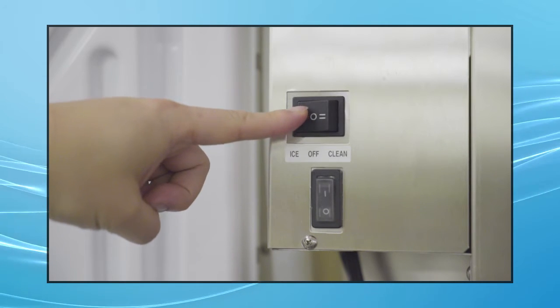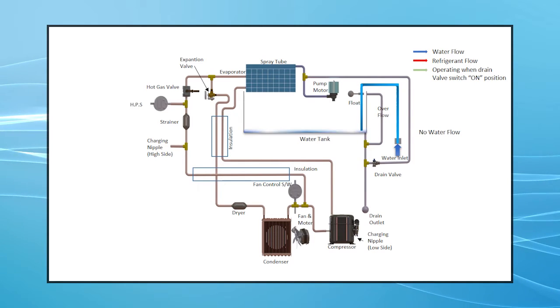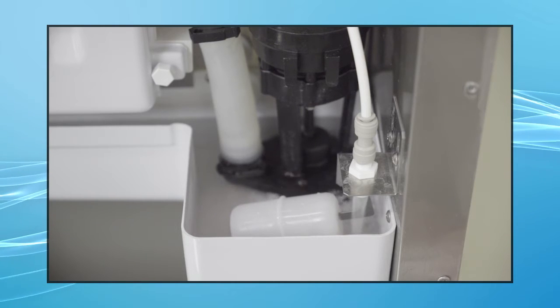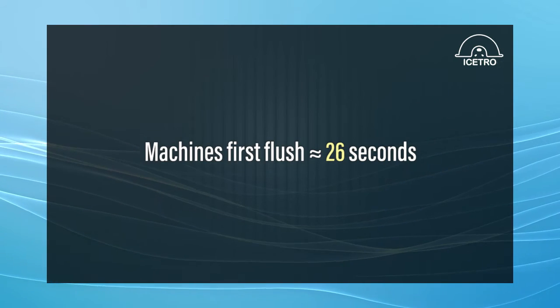The drain valve will open and water pump will turn on. The control board relay for each component is clearly marked and when it operates will have a light turn on next to the marked relay. The machine's first flush lasts about 26 seconds.